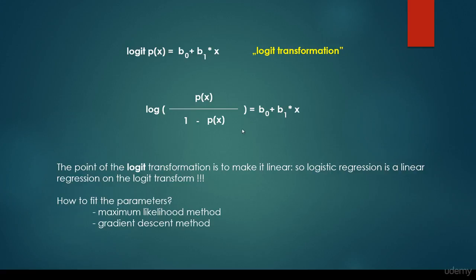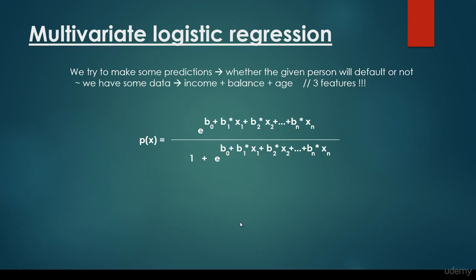How to fit the parameters — the B₀ and B₁ parameters — using the maximum likelihood method or gradient descent method, as we have seen for linear regression. Of course, we can have multivariate logistic regression. We try to make predictions whether the given person will default or not, but we have other data such as income, balance, and age. It can be expressed in this form: x₁ is going to be the income, x₂ is going to be the balance, x₃ is going to be the age. In this general formula, I suppose that we have n features. In this case we have three features: income, balance, age. So we are able to generalize this logistic regression to as many features as we want.